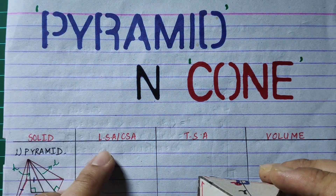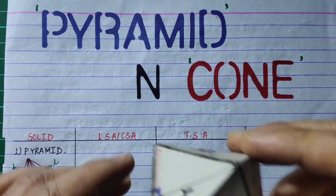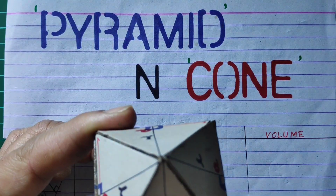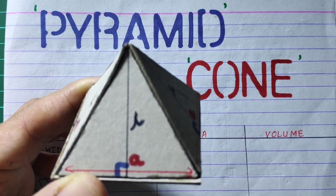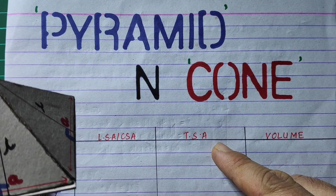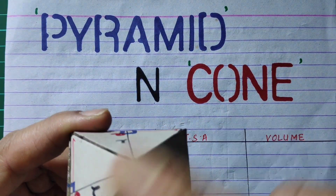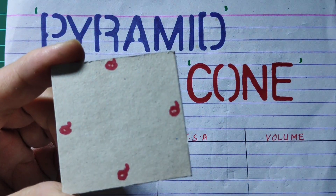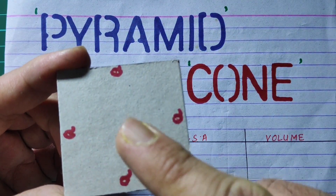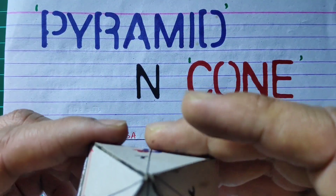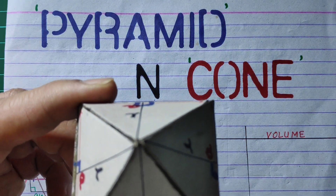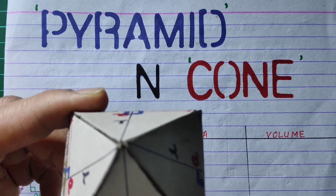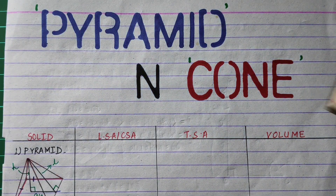Let's talk about the lateral surface area. The lateral surface area consists of four triangular faces. Then we have the total surface area, which includes the lateral surface area plus the base, and the volume — these are the three-dimensional parameters of the pyramid.